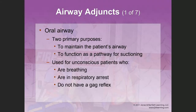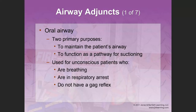Airway adjuncts. You have the oral airway, which goes into the patient's mouth. It has two primary purposes: to maintain the patient's airway and to create a pathway for suctioning. The indication for an oral airway is: one, the patient must be unresponsive; two, the gag reflex must be absent — a gag reflex is a vomiting reflex; and three, the patient must have a ventilation problem.